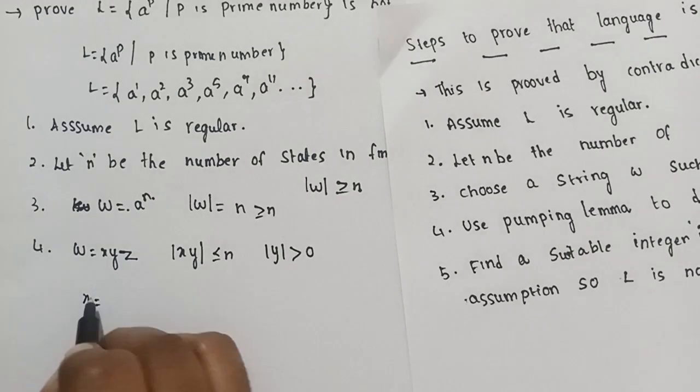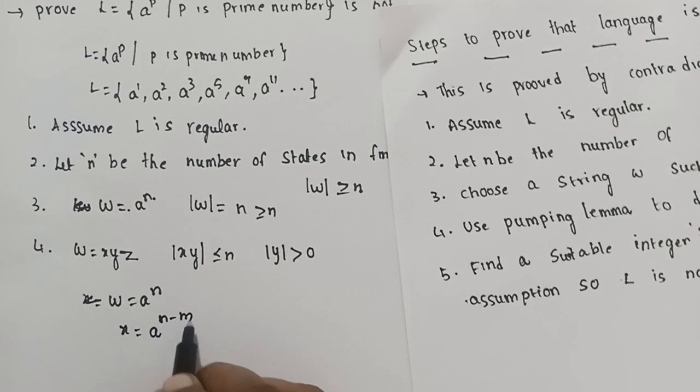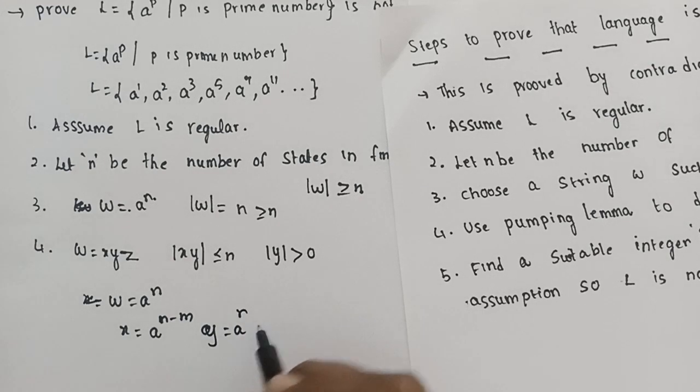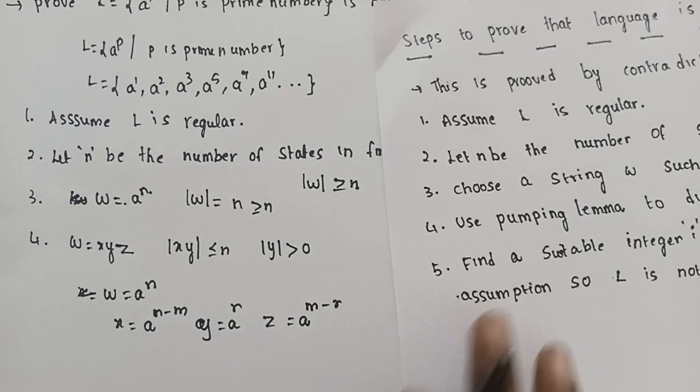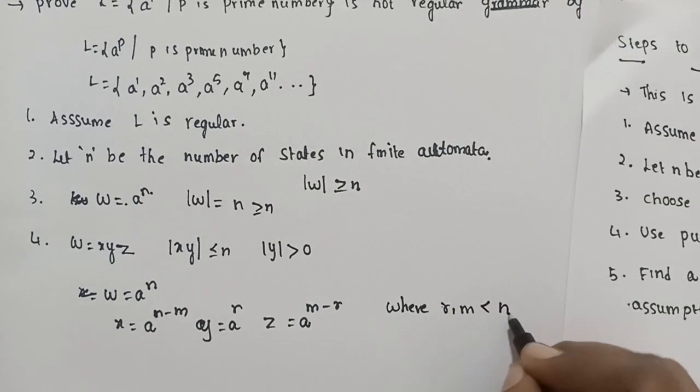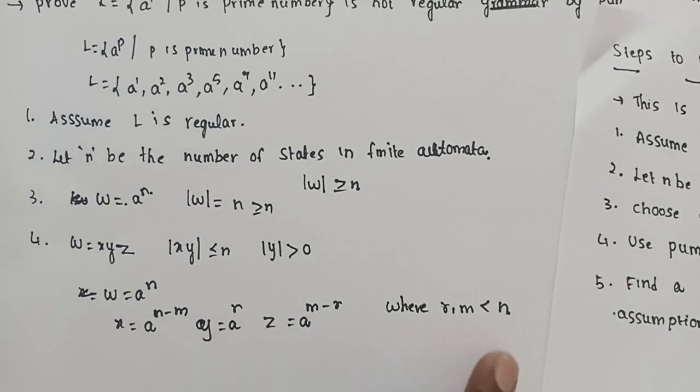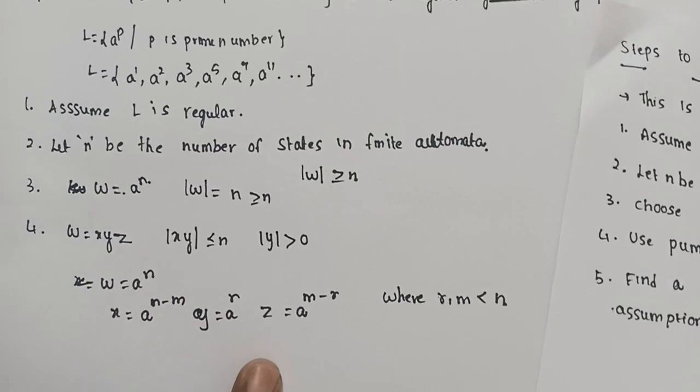We divide the string w equal to a^n. Now x is equal to a^(n-m), y is equal to a^r, and z is equal to a^(m-r), where r, m less than n. So xy is less than or equal to n and mod y greater than 0, the conditions are satisfied.